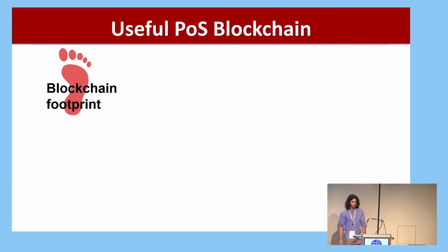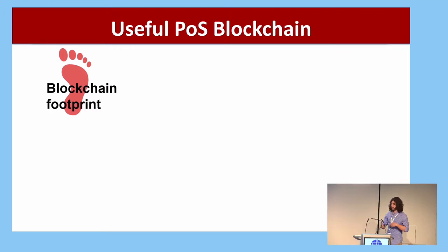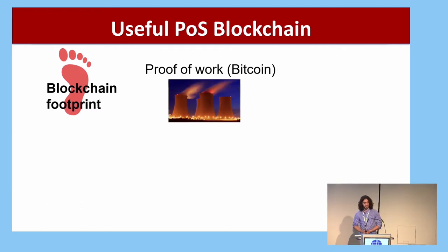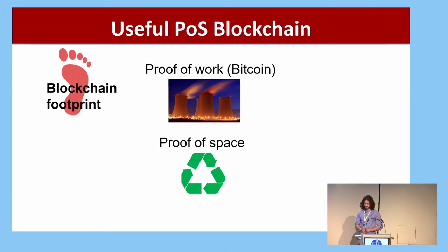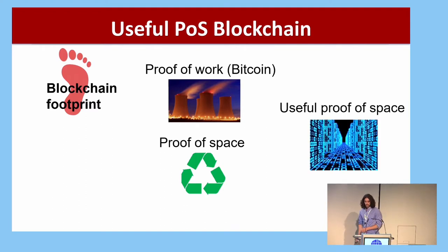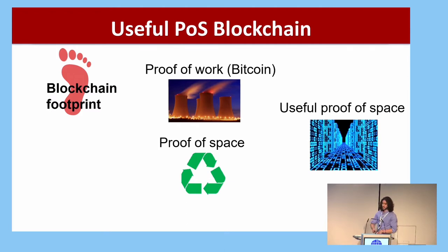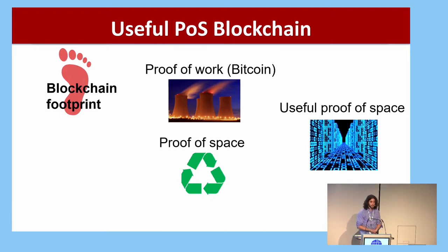If you think about applying proof of space to blockchains like a Bitcoin alternative, one concern is the blockchain carbon footprint. Proof-of-work Bitcoin wastes a lot of energy since all the miners continuously use energy to maintain the system. Proofs of space are more eco-friendly because they reuse the same space and don't require consuming more energy every minute. But the space still isn't being used for anything useful. A useful proof of space would push further and have a positive footprint — the work miners do to maintain the Bitcoin-like system can simultaneously be used for data storage.